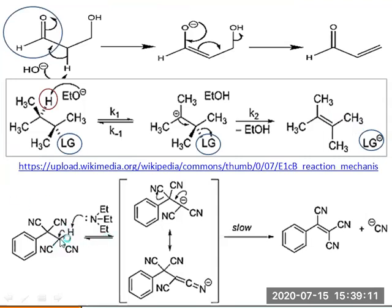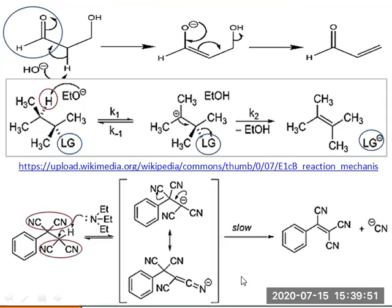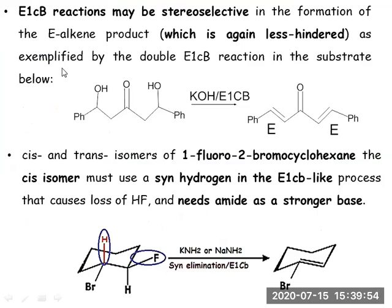In this example, the beta carbon has a hydrogen as well as a cyanide group attached; at the alpha position there is also a cyanide group. Cyanide is both an electron-withdrawing group and a good leaving group. Using a base like triethylamine, the hydrogen is removed to generate a carbanion that is stabilized by resonance with the cyano groups. This carbanion then breaks down to give a highly stable product, illustrating the E1cB mechanism.